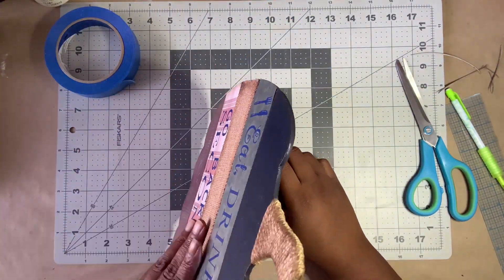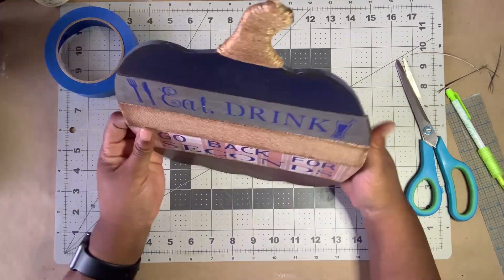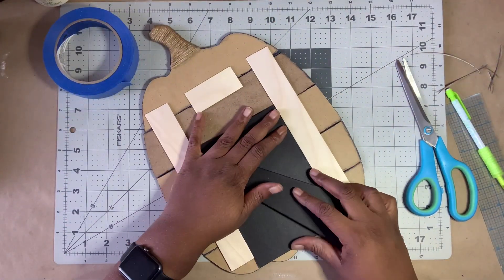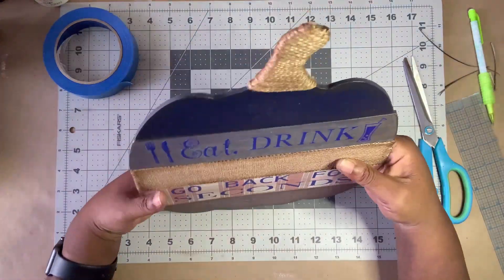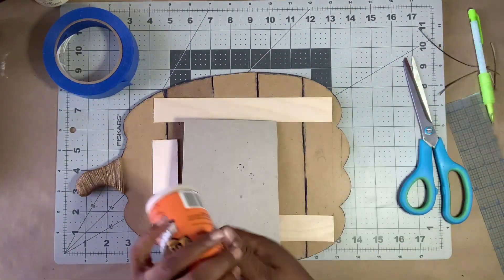Before permanently attaching the stand, I test it to make sure it will stand up. Once I determine its placement, I make a mark and then glue it down with wood glue and set it aside to dry.